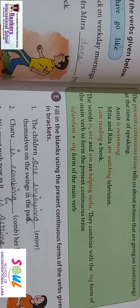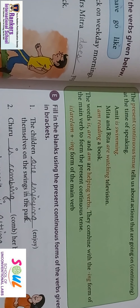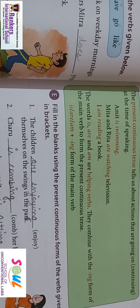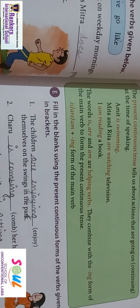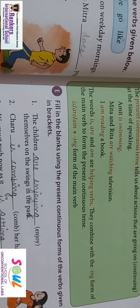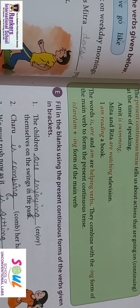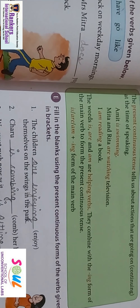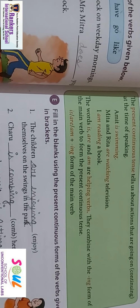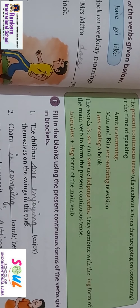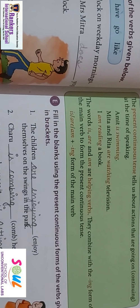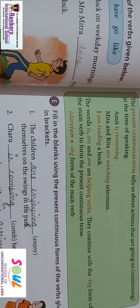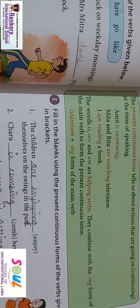They combine with the ing form of the main verb. For example: jump becomes jumping, paint becomes painting, write becomes writing, run becomes running. So these verbs are all in ing form. Then they change into present continuous form.